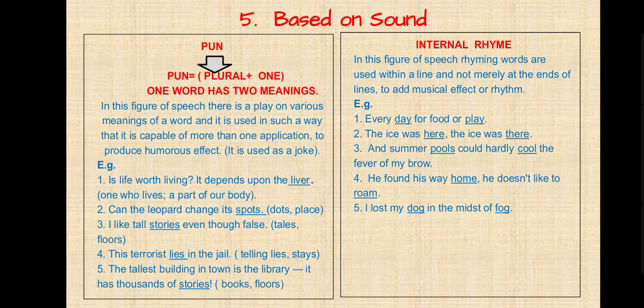Next, internal rhyme. In this figure of speech, rhyming words are used within a line and not merely at the end of lines, to add musical effect or rhythm. Examples: 'Every day for food or play.' 'The ice was here, the ice was there.' 'The murmuring pools could hardly cool the fever of my brow.' 'He found his way home, he does not like to roam.' 'I lost my dog in the midst of fog.'